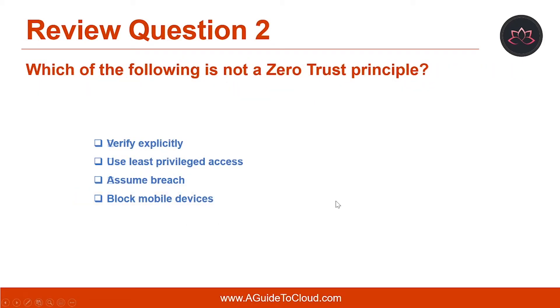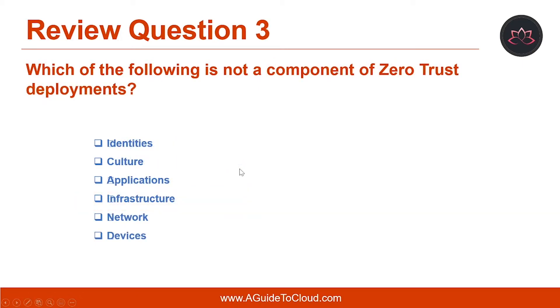Let's look at question number 2. Which of the following is not a zero-trust principle? The correct answer is block mobile devices.